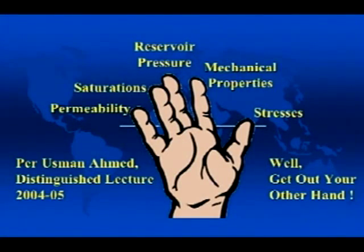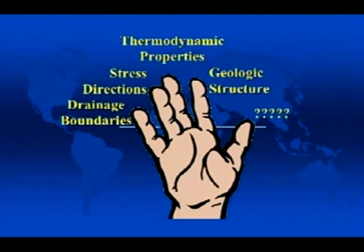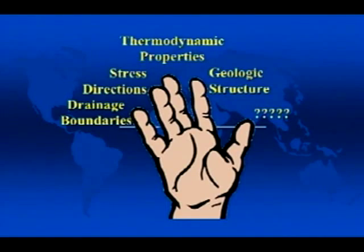Last year, Usman Ahmed gave a lecture on fracturing and held up his hand saying there are only five things you need to know: permeability, saturations, reservoir pressure, mechanical properties, and in-situ stresses. That's a pretty good list. But I'm here today to tell you — get out your other hand. How about drainage boundaries? Stress directions? Thermodynamic heat transfer properties of the rocks? Geologic structure has a tremendous influence on fracturing. We could probably come up with a few more and take our shoes off.